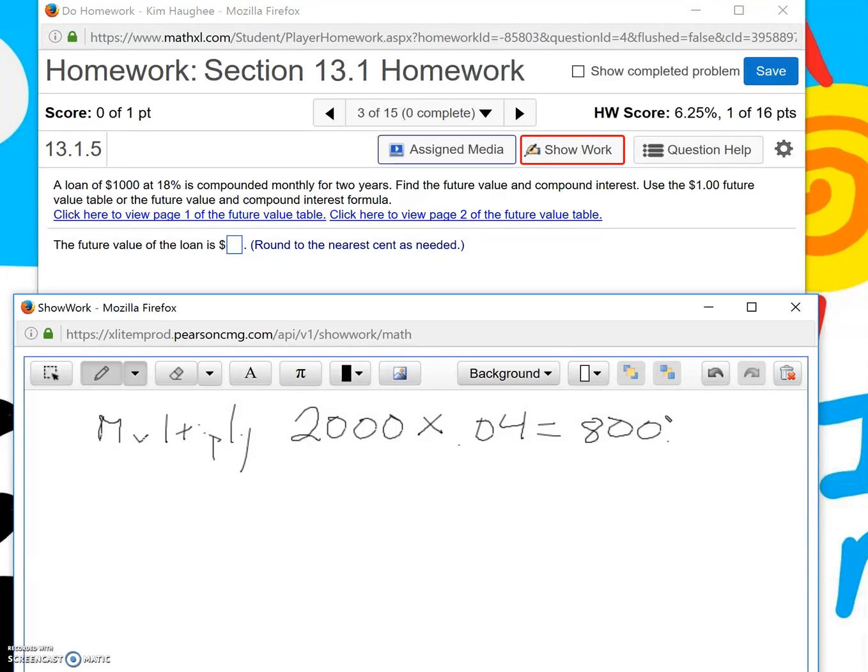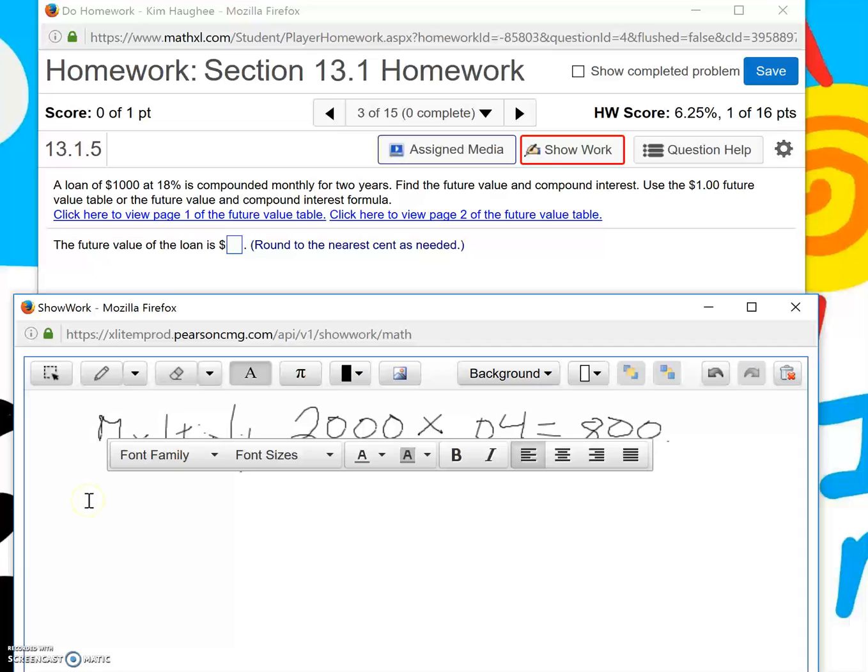Or instead of having a stylus, maybe you need to type. Click the A and you can create a cursor that shows you can type. So instead you could say 'multiply 2000 and 4%' as 2000 times 0.04. This equals 800.